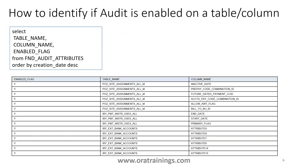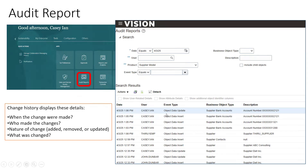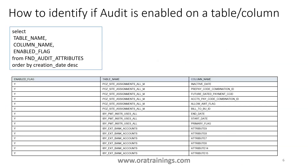Now, there are a couple of tables to be aware of. If you observe the standard audit history report, it may not suit your requirement. If you want to design your own custom report, I'll show the list of audit tables available for the supplier entity. Before that, if you want to know whether audit is enabled on a specific standard table or not, you can navigate to this particular query: FND_AUDIT_ATTRIBUTES. It clearly tells you on which table and which column audit is enabled.